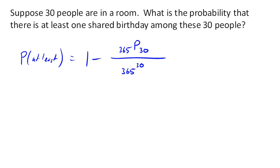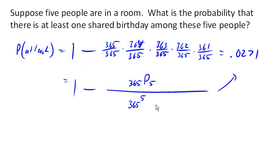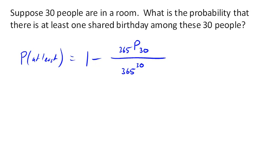And computing that, that comes out to be .706 or 70.6%, which is probably a little bit surprising. That means out of 30 people in a room, there's a 70% chance that there's at least one shared birthday in that room.